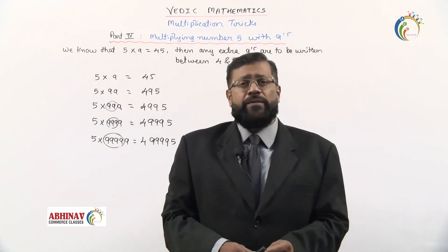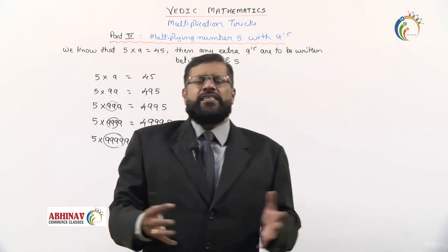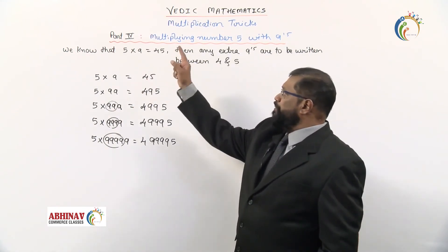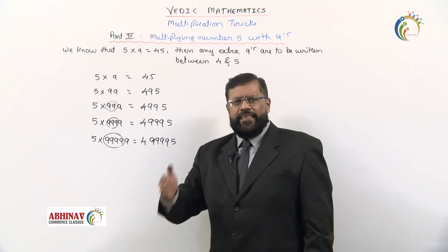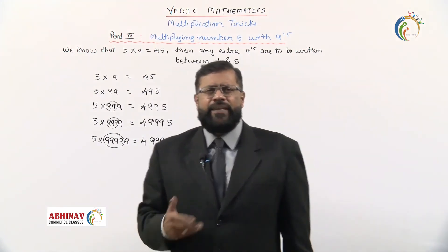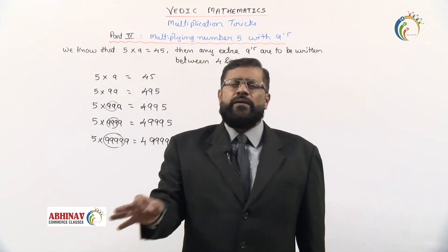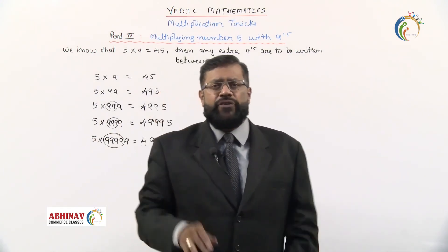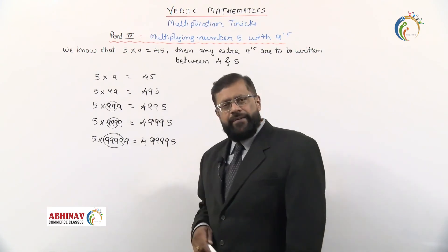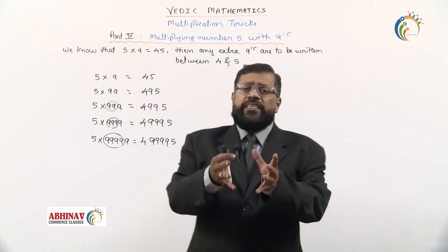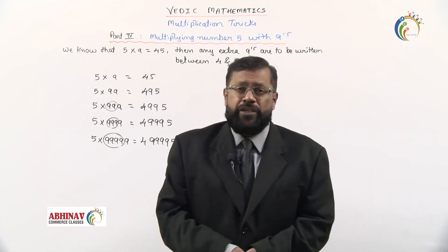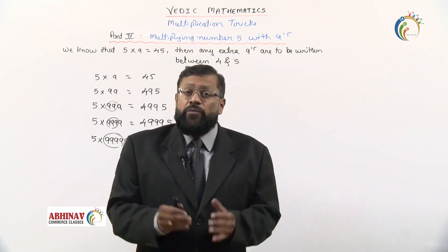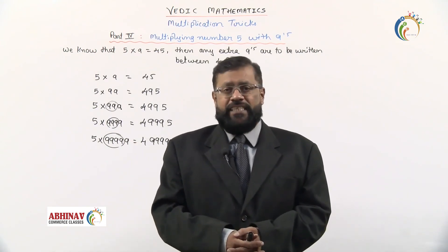This is the fun of Vedic mathematics — there are many more such tricks. Remember: when you multiply 5 with any number made of nines, the basic result is 5 × 9 = 45, and you write the extra nines between 4 and 5. In the next session we shall take up part five with more interesting tricks. Thank you.